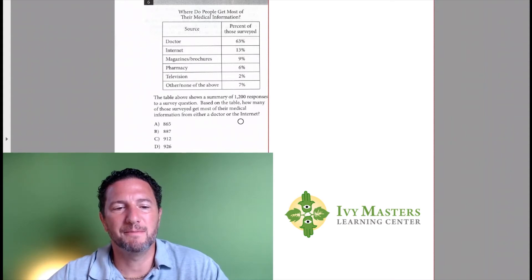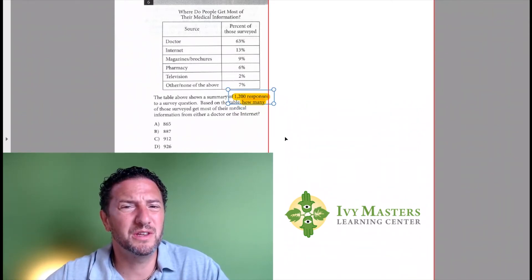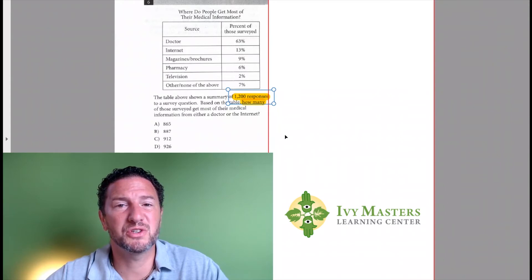Based on the table, how many of those surveyed get most of their medical information from either a doctor or the internet? So a couple of things going on here. First of all, it's how many—here we have percent, but we also have the number of responses. If you know what you need to do here, you've got to get a percent of the responses. What does 'of' mean? It means multiply. What does percent mean? It means over a hundred or the decimal.